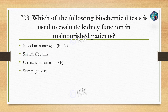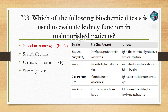Which of the following biochemical tests is used to evaluate kidney function in a malnutrition patient? Option A: blood urea nitrogen. Option B: serum albumin. Option C: C-reactive protein (CRP). Option D: serum glucose. The correct option is blood urea nitrogen (BUN). BUN is used to clinically assess kidney function, protein metabolism, and hydration status. BUN levels increase in kidney dysfunction and dehydration, and decrease in liver disease and malnutrition.